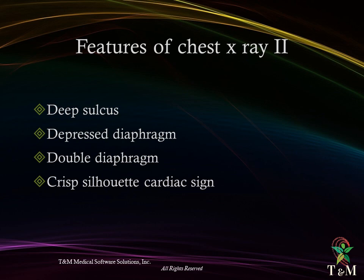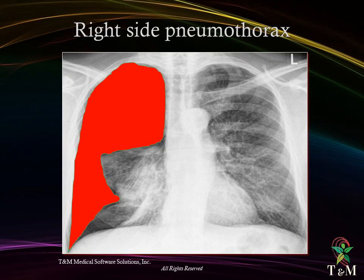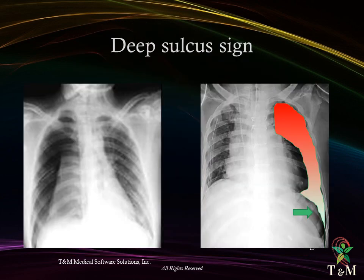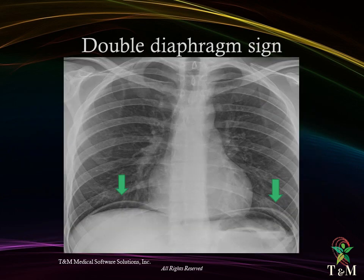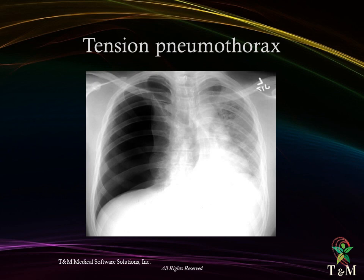Other chest X-ray features include the deep sulcus sign, depressed diaphragm, double diaphragm sign, and crisp silhouette cardiac sign. Examples shown include left-sided pneumothorax, right-sided pneumothorax, deep sulcus sign, double diaphragm sign, depressed diaphragm sign, and right-sided tension pneumothorax with mediastinal shift.